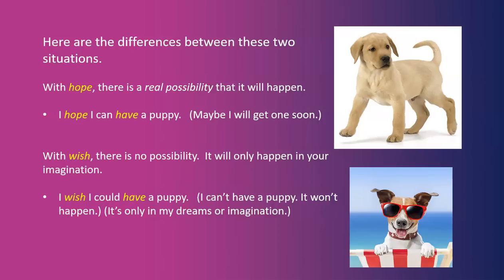I hope I can have a puppy — maybe I will get one soon. With wish, there is no possibility. It will only happen in your imagination. I wish I could have a puppy. I can't have a puppy. It won't happen. It's only in my dreams or imagination.